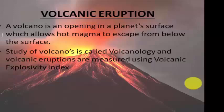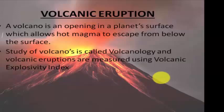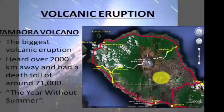Volcanic eruptions are measured using the Volcanic Explosivity Index, which measures the extent of an eruption. Eruptions can come from side branches or from the top of the volcano. Some eruptions are terrible explosions that throw out huge amounts of rocks and ash, and they may kill many people around.